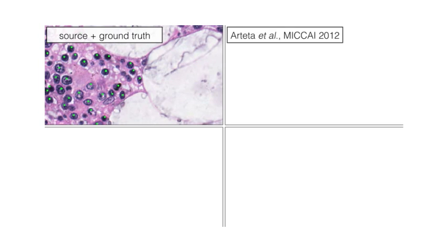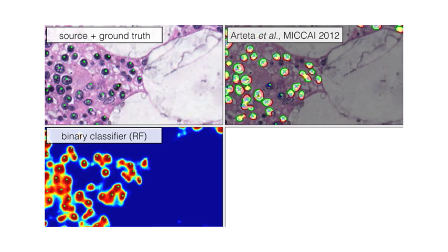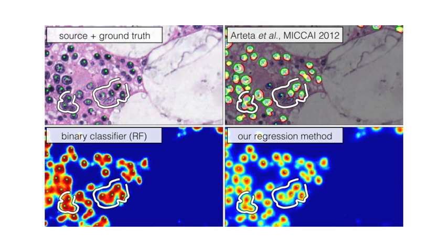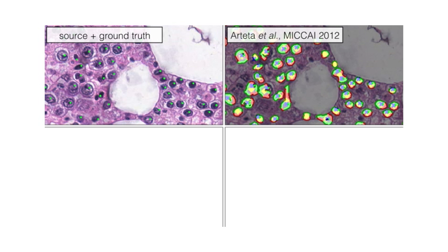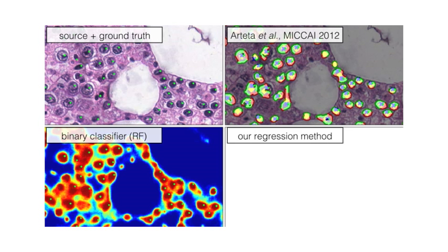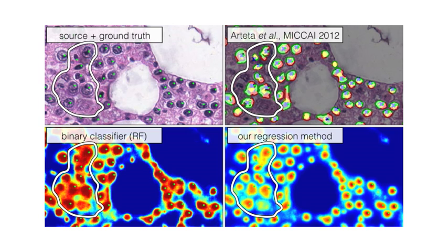Our method is able to separate cells that are very close without object separation as extra post-processing step. Binary classification produces less well defined valleys between objects. Inhomogeneous staining may lead to high probability scores for foreground in a binary classifier, but both the current state-of-the-art and our regression method can cope with these artifacts.